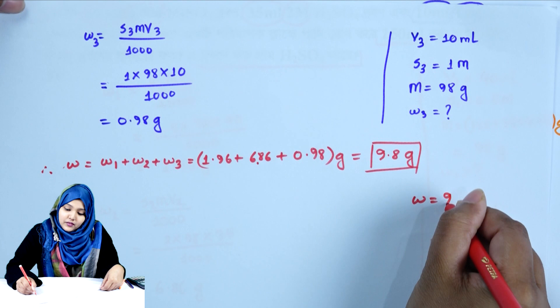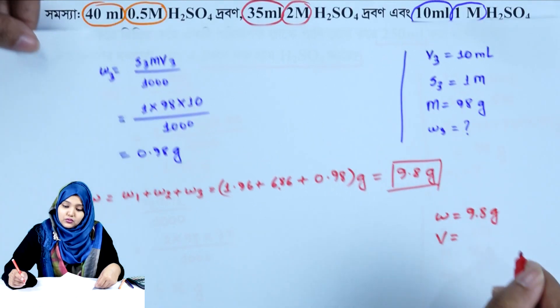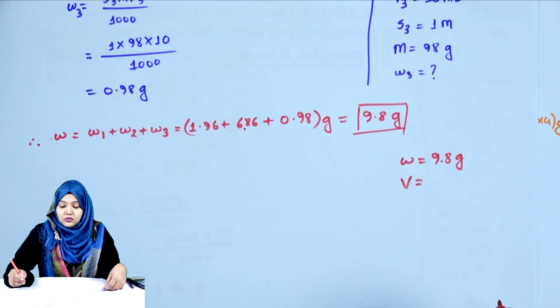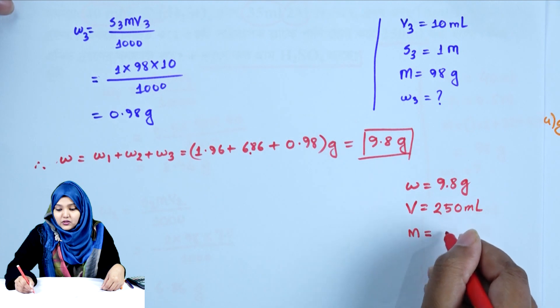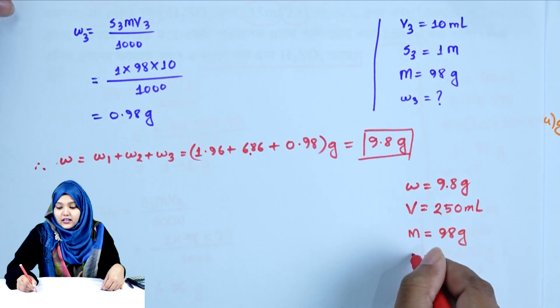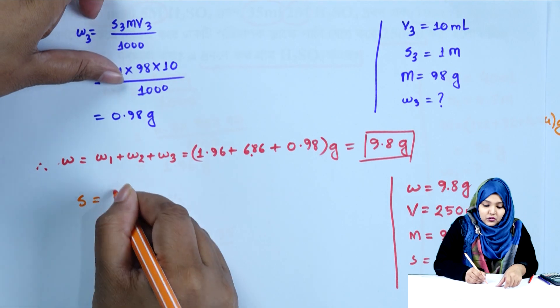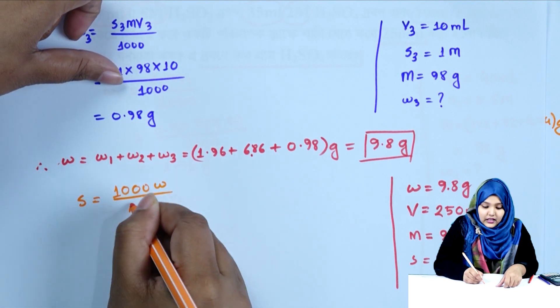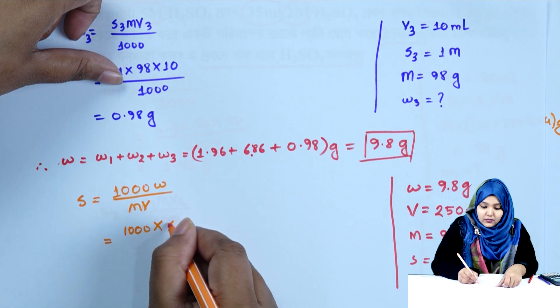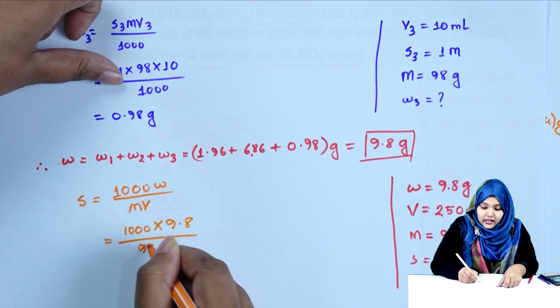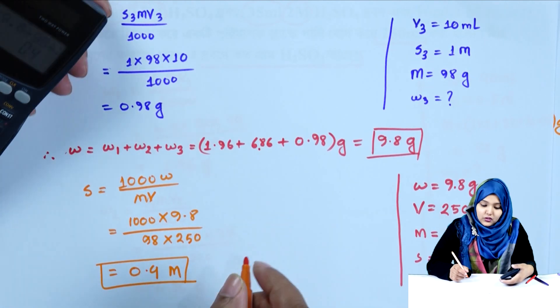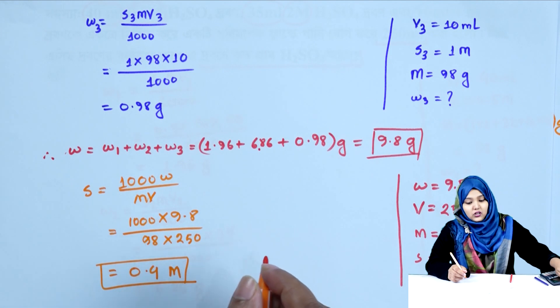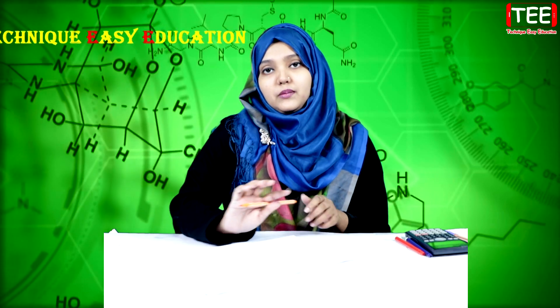Now, w = 9.8 grams, volume V = 250 ml — this is the solution that was prepared. In this 250 ml solution, sulfuric acid mass = 9.8 g, molar mass M = 98 g/mol. So molarity S = 1000 × w / (M × V) = 1000 × 9.8 / (98 × 250) = 0.4 molar. So the molarity of this mixed solution is 0.4 molar.